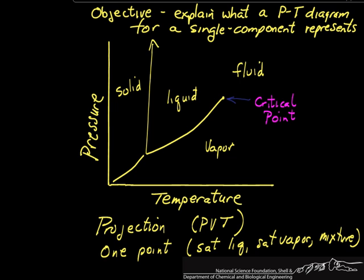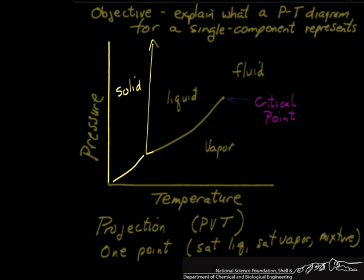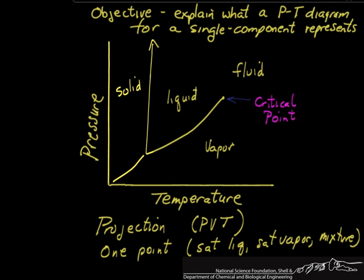So let's look at each of the parts of the diagram. The solid region is fairly self-explanatory. The critical point is the highest pressure-temperature point where we could have vapor-liquid equilibrium. And the important things to note is that regions are labeled as liquid, as vapor, and as fluid, but there's no dividing lines.